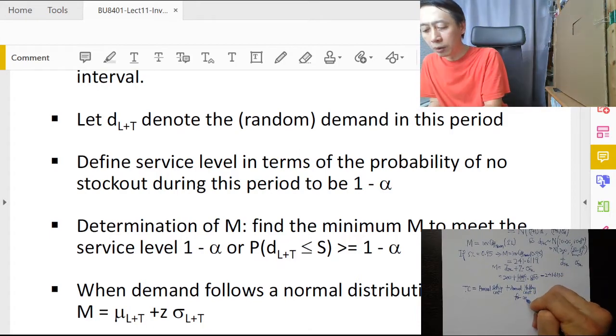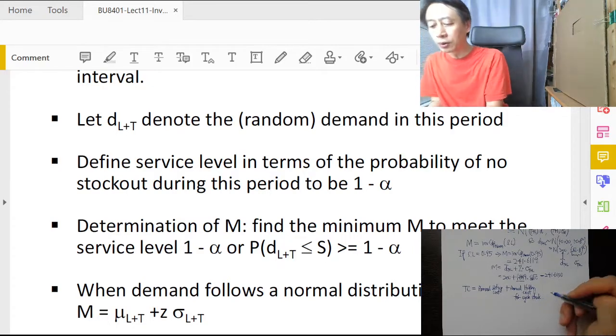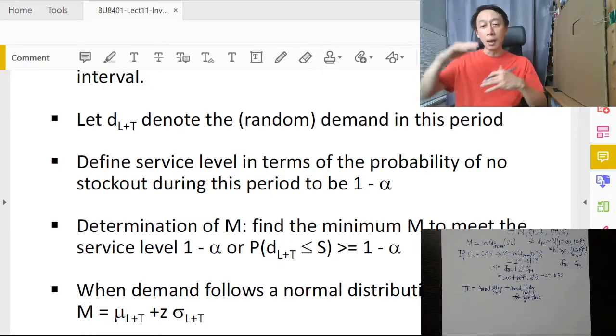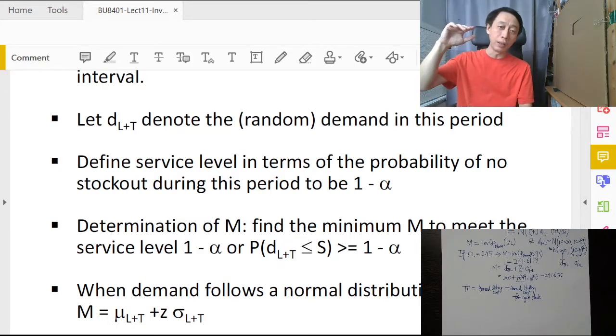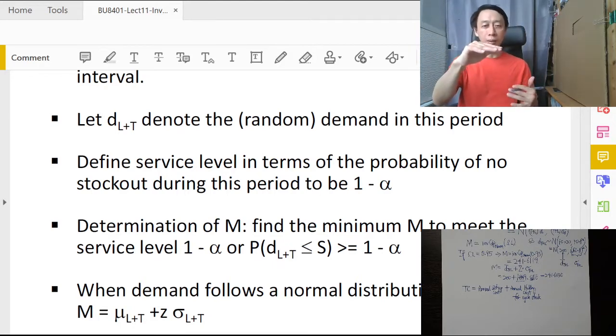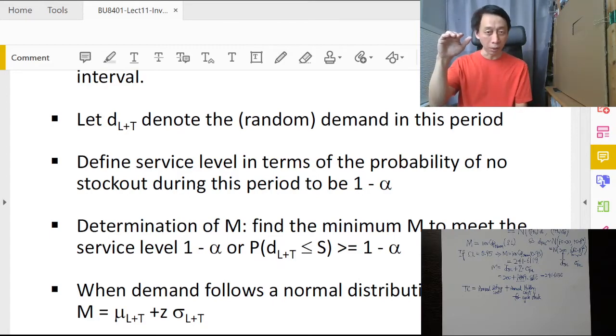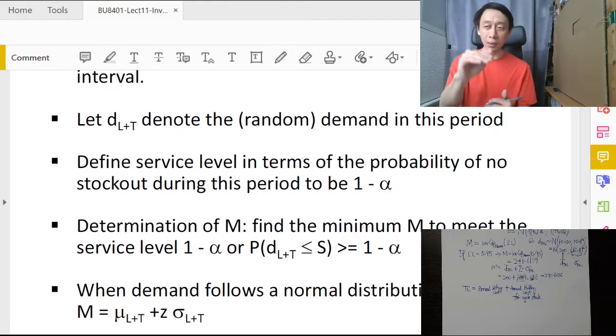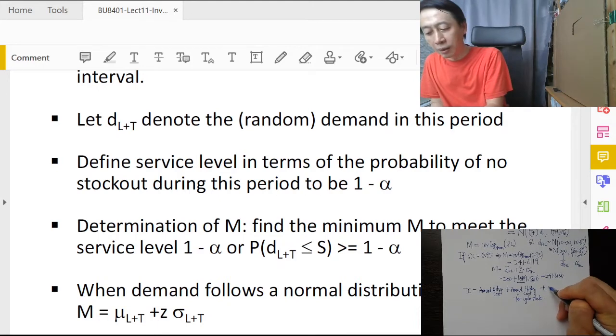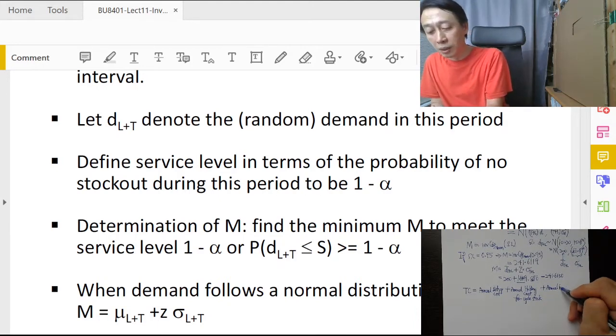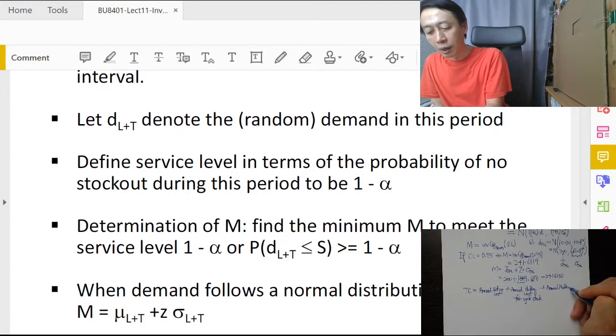The idea is we have annual setup cost, we have annual holding cost for cycle stock. What is cycle stock? Cycle stock is that part of the inventory that we keep and hold because it is the average demand. That part of the stock that we hold is meant to meet demand, meant for sale. There is a part of the stock that we hold and we don't mean it for sale, and that's called safety stock.